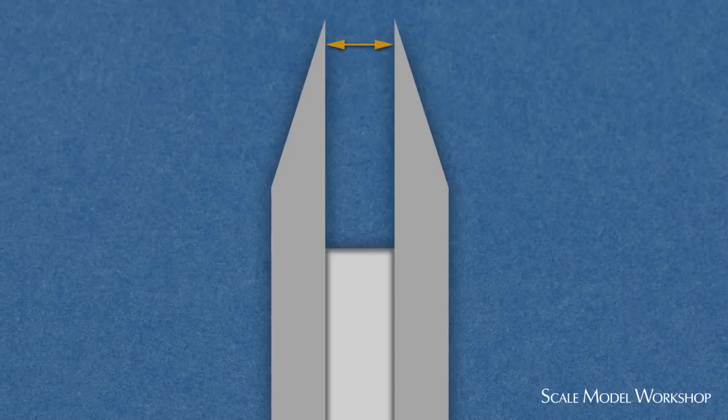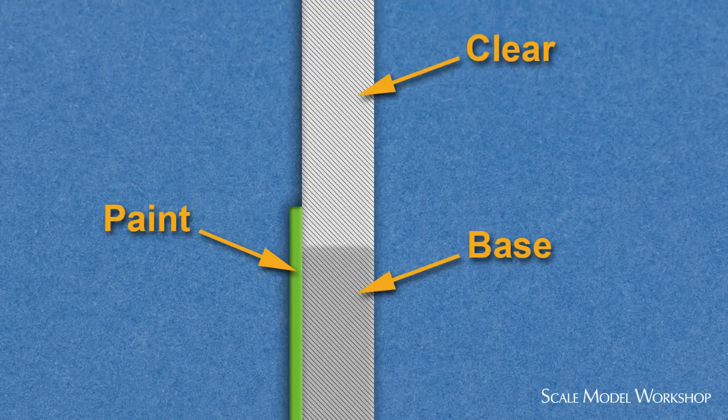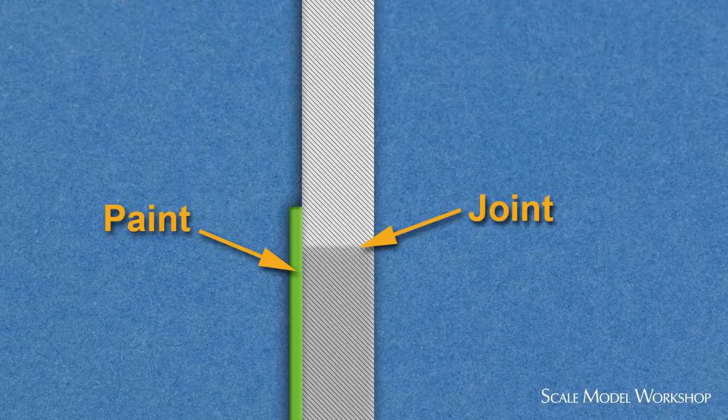Just like a well-done undercarriage and set of wheels can go a long way to lending reality to a model, hiding the joint between the clear and solid plastic pieces can also work wonders to an overall realistic look. So I always plan construction so that the paint is carried over the joint.